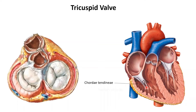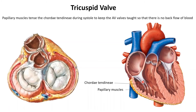On the other end the chordae tendineae are attached to papillary muscles. 'Papillary' means finger-like, so these are finger-like projections of the myocardium. The purpose of the papillary muscle and chordae tendineae apparatus is to keep the valves taut to prevent backflow of blood.